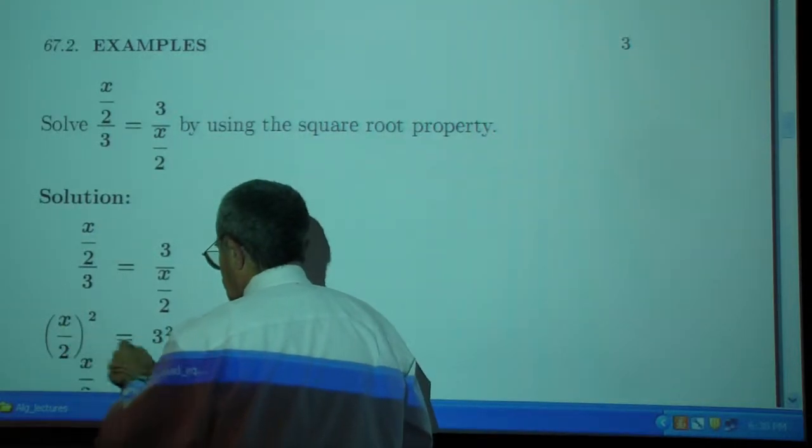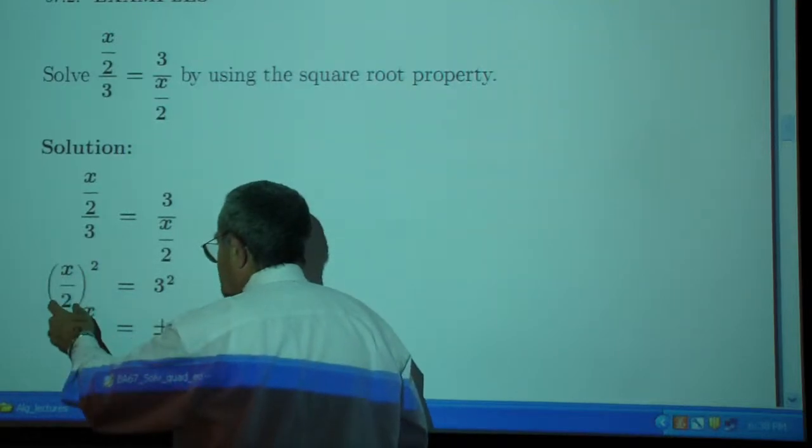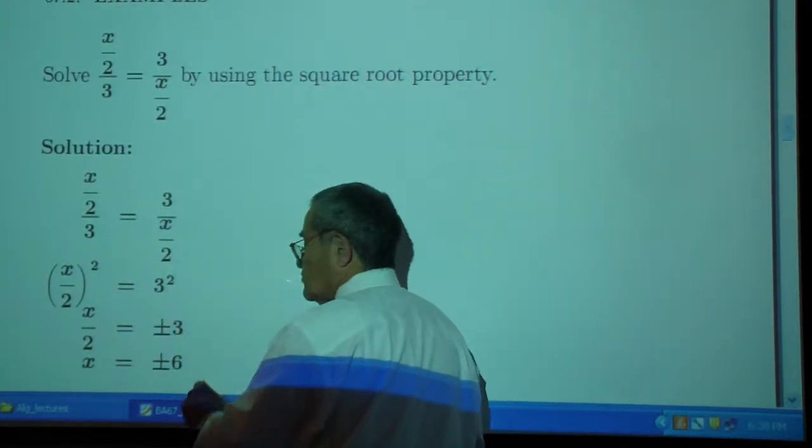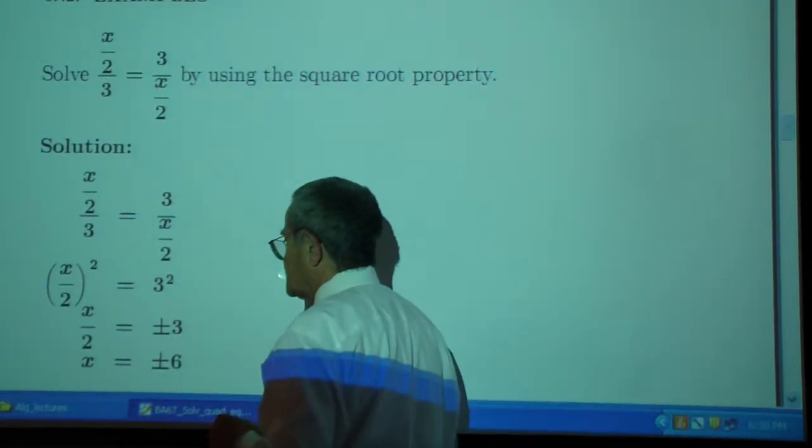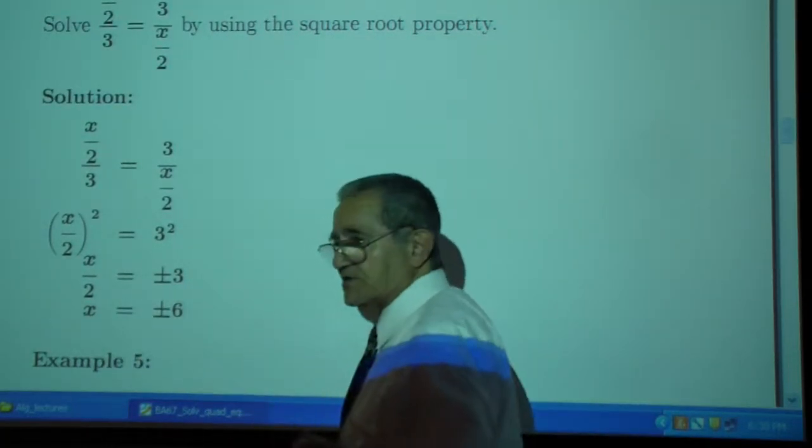Which I can rewrite as x over 2 squared, which is 3 squared. I take the square root of the left, which is just x over 2. The square root of the right, which is plus or minus, because I have a variable here, plus or minus 3. And then I multiply by 2, so x is plus or minus 6.